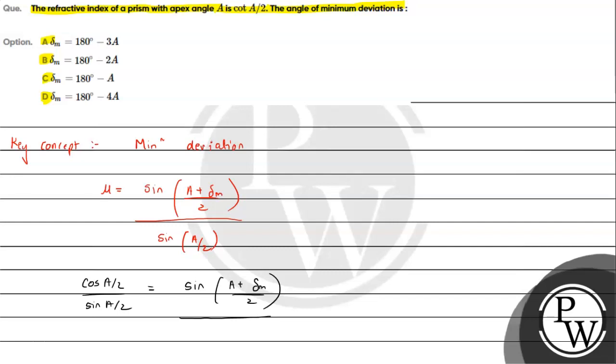The sin(A/2) terms cancel out, so we have cos(A/2) = sin((A + δₘ)/2).